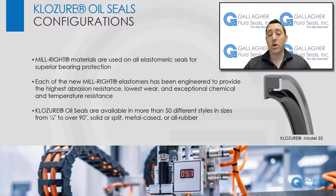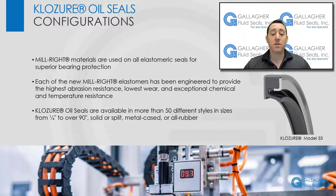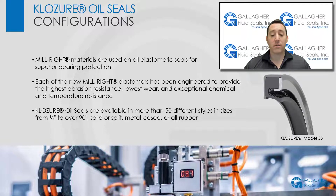Now we are going to talk about the various configurations of closure oil seals from Garlock. Closure oil seals are available in a wide variety of configurations to meet the requirements of major industries. Millwright materials are used on all elastomeric seals for superior bearing protection. Millwright elastomers provide longer service life than their predecessors. Each of the new Millwright elastomers has been especially engineered to provide the highest abrasion resistance, lowest wear, and exceptional chemical and temperature resistance.